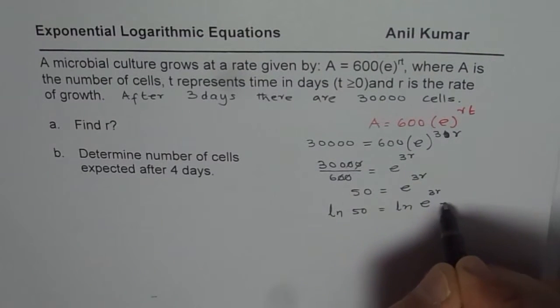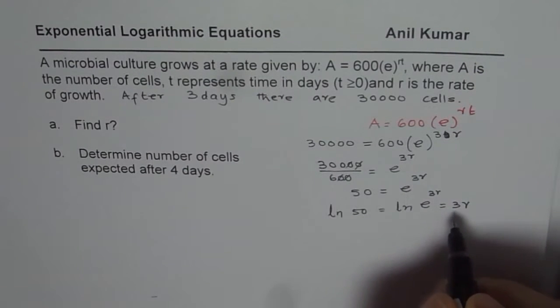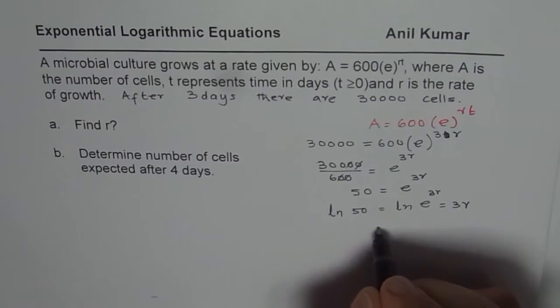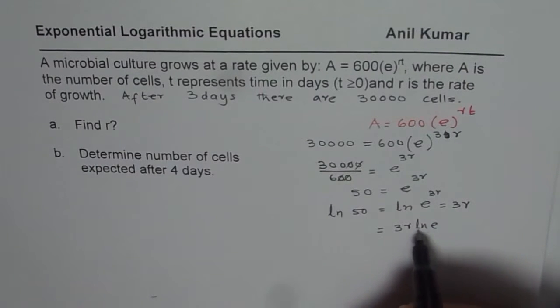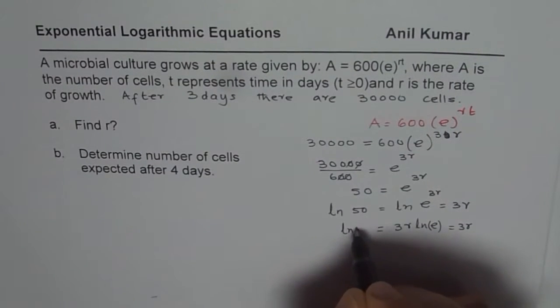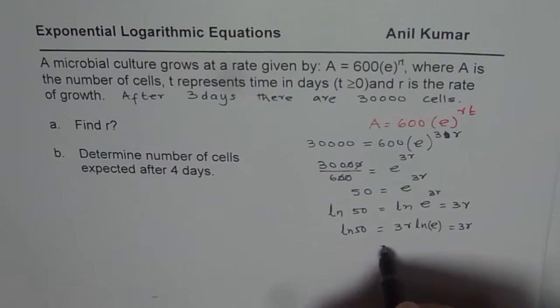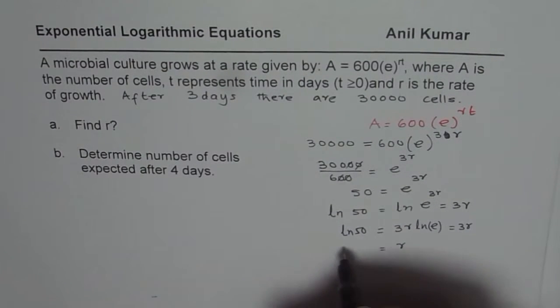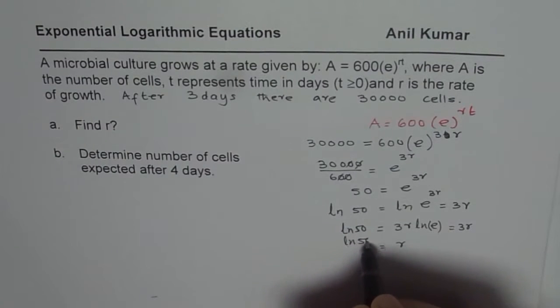This can be written as 3r. That is the property of logs. Let me do one more step here. We could write 3r ln e, and ln and e are inverse of one another, so it is 1. That's why we get this as 3r. So we get ln 50 equals 3r, so the rate of growth r will be equals to ln 50 divided by 3.